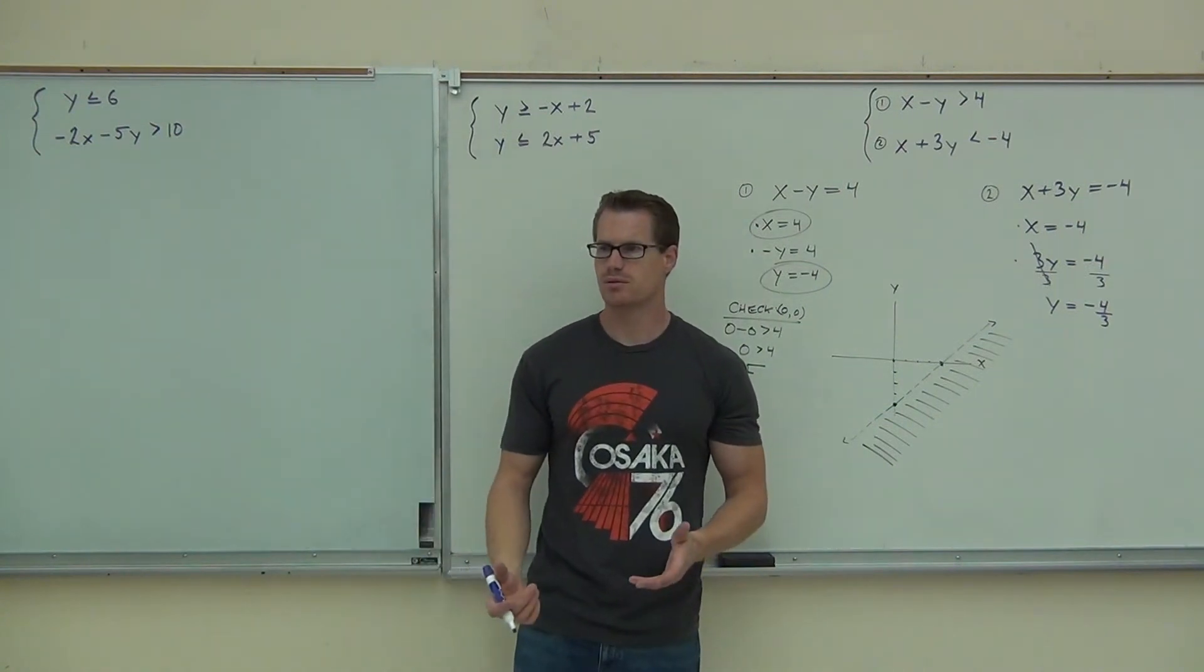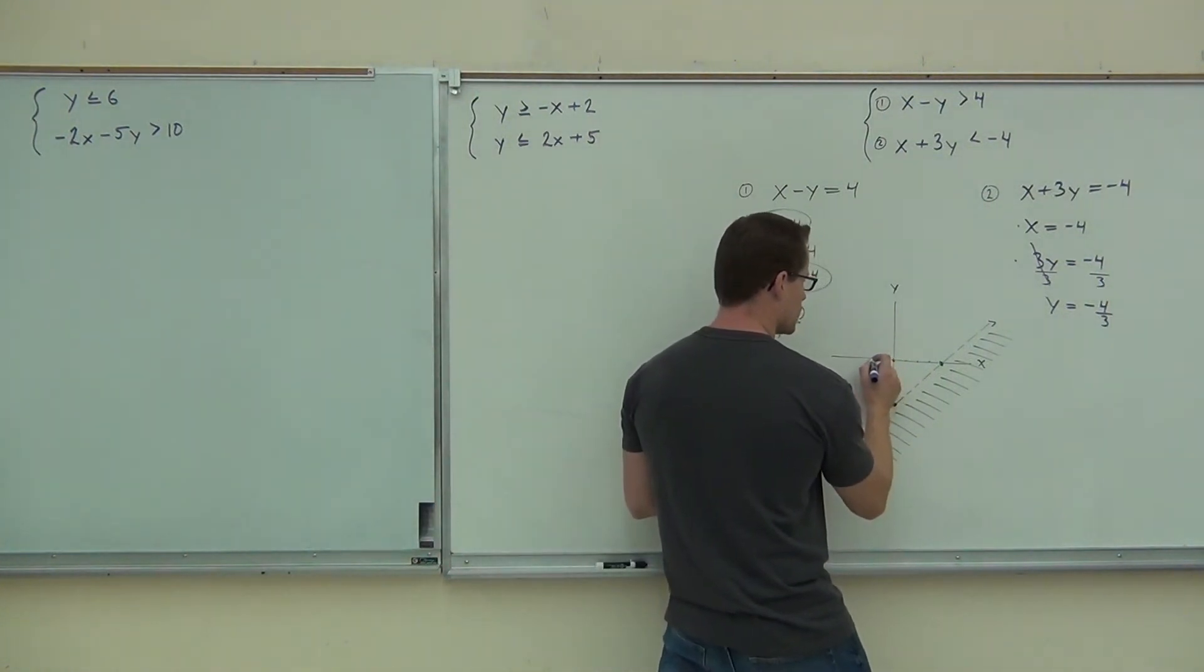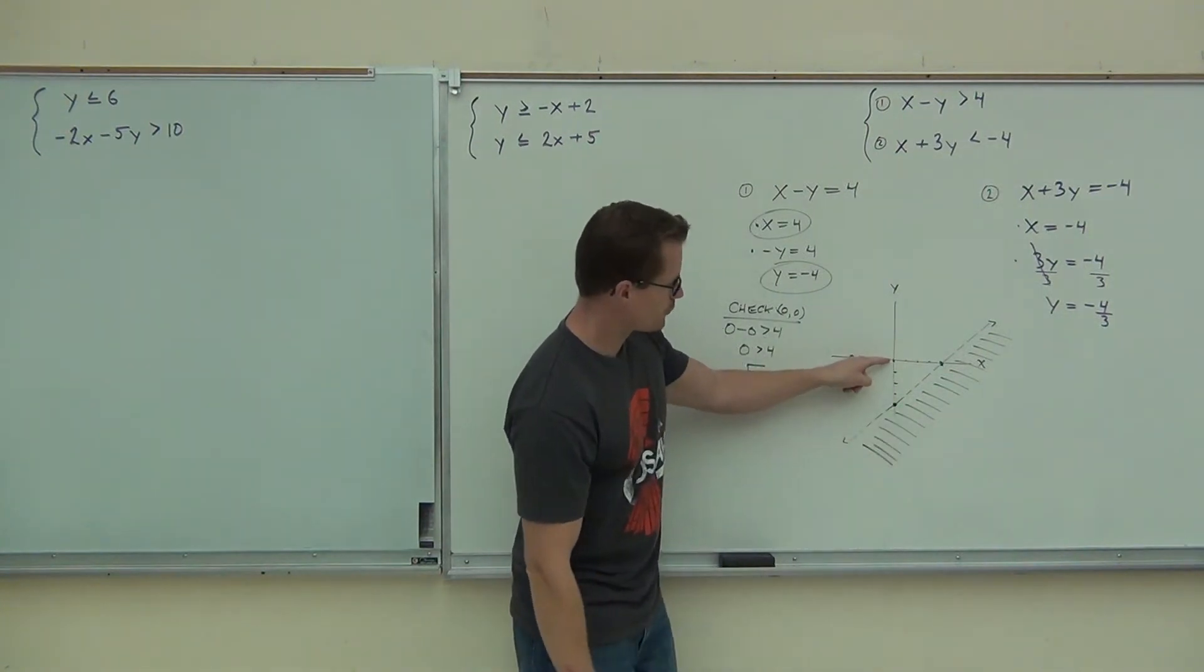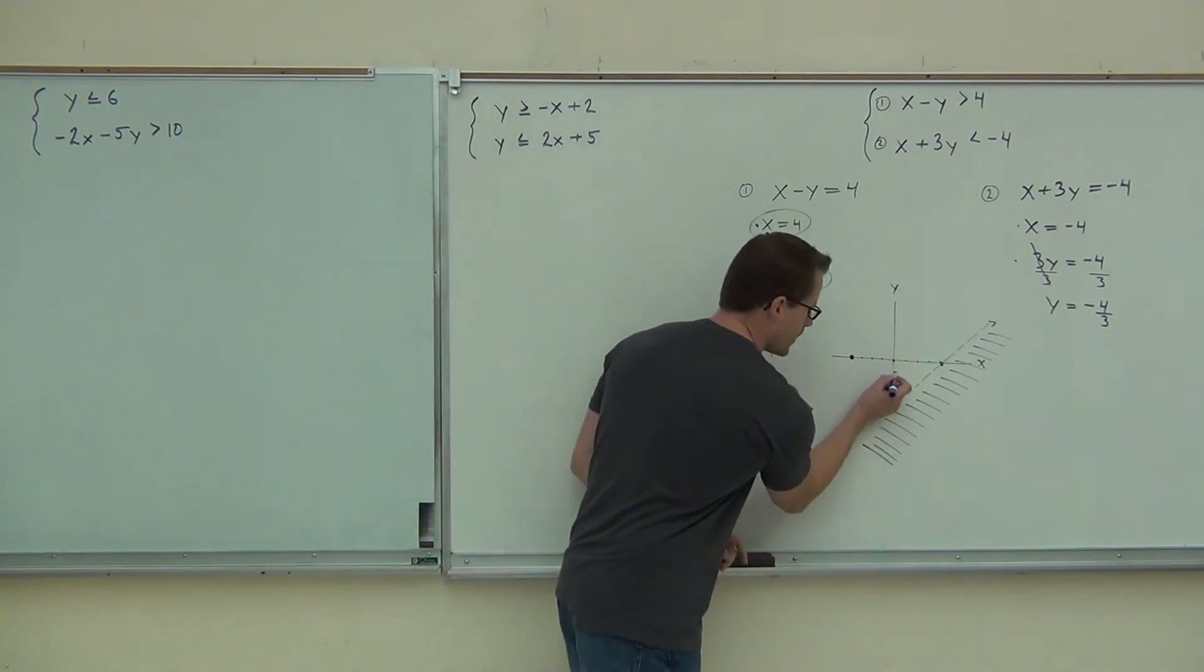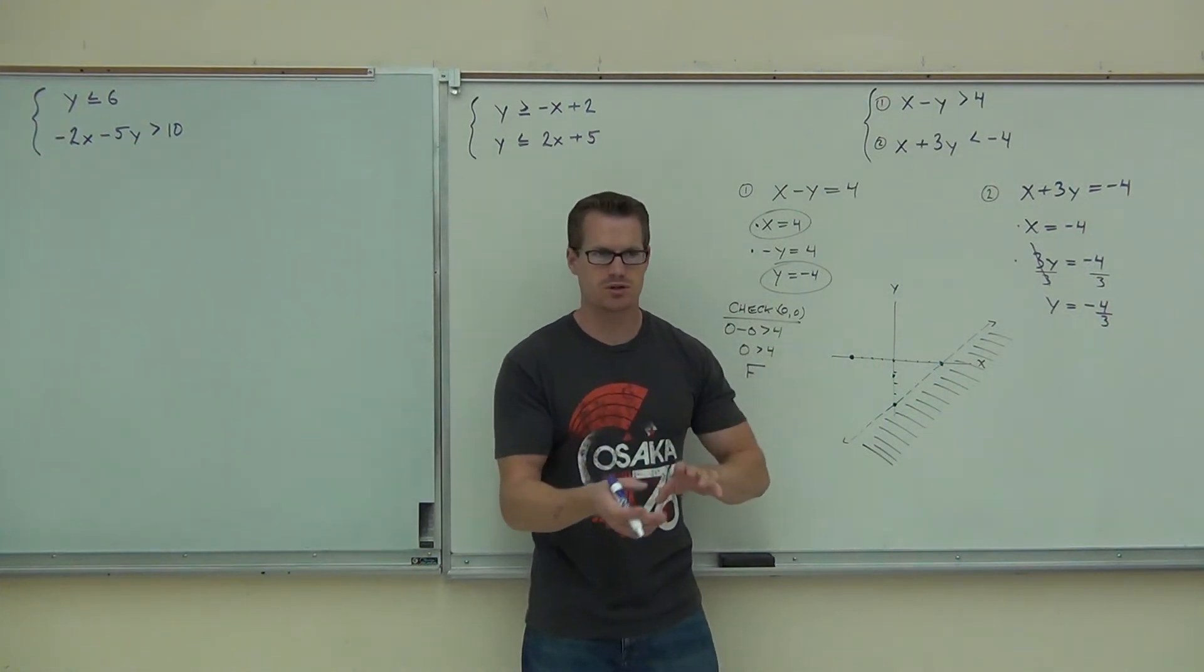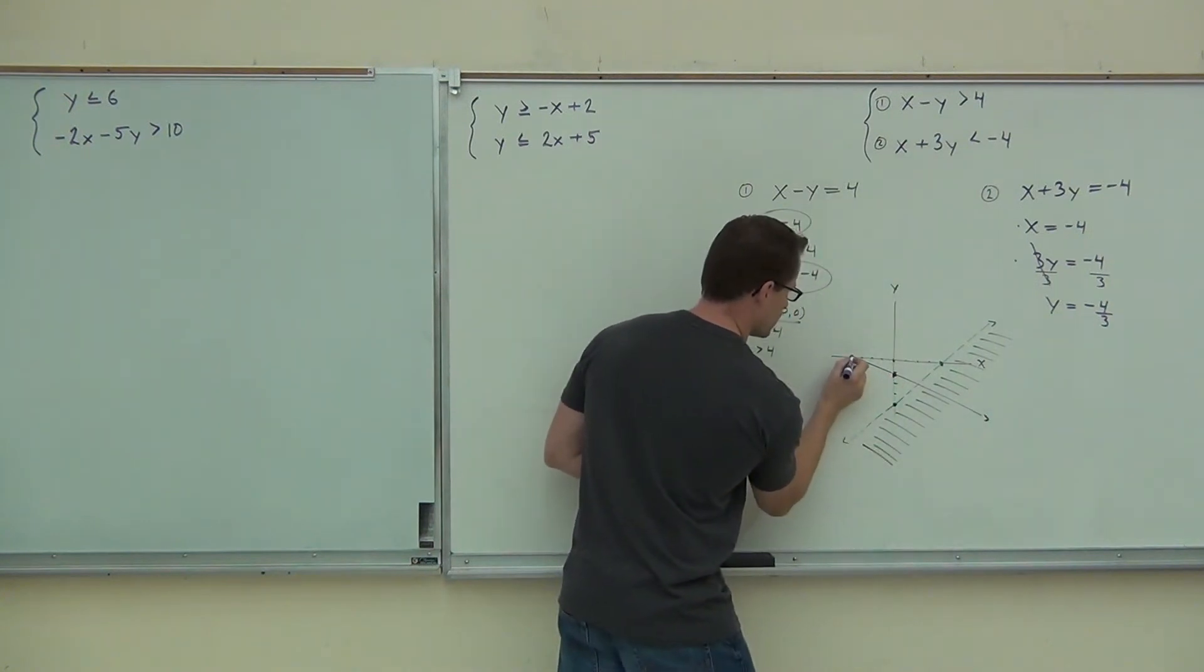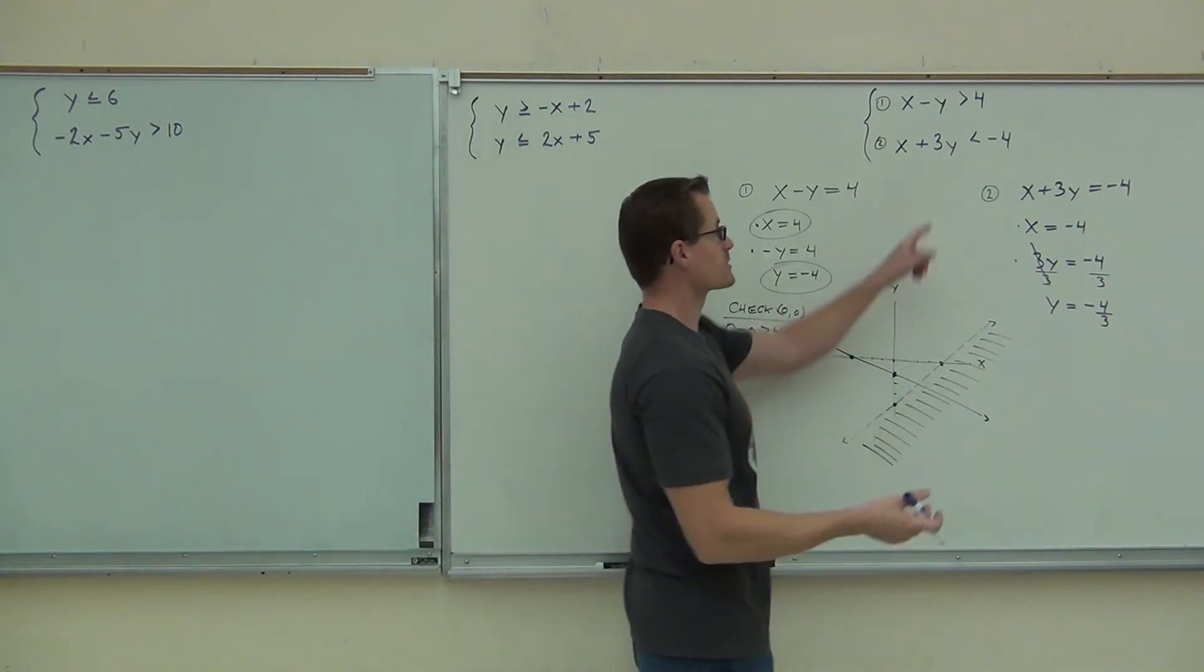We get x equals negative four. No problem. Y equals negative four thirds. Is it okay to have that fraction? As long as you know how to graph a fraction on a number line, that's fine. So x equals negative four. So we're going over here to negative four. Negative four thirds is negative one and a third. So we're going to go negative one on the y-axis and then a little bit more. A third of the way between negative one and negative two. So that's right about there. You don't have to be exact, exact. But don't just put it on negative one. Don't just put it on negative two. Be between there at some point, okay? And we're going to graph that line.